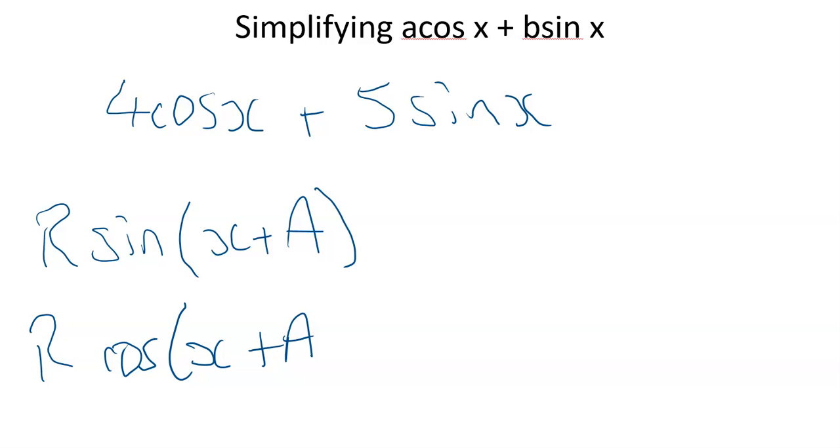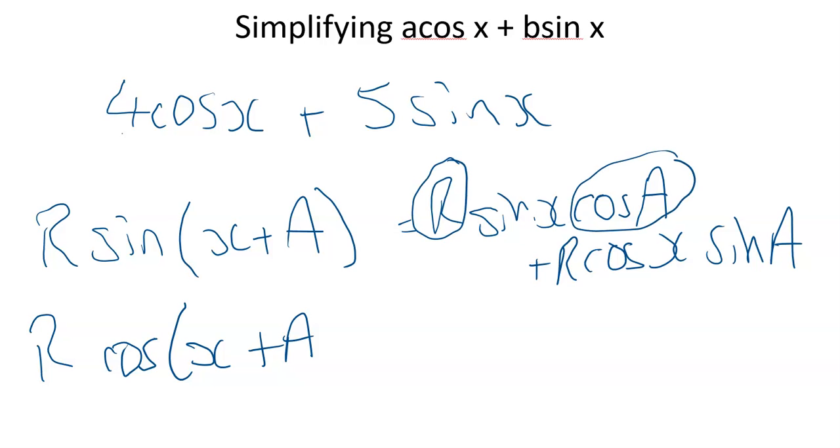It's sort of like doing the reverse of the double angle rule. If this was a double angle rule answer, then what would the values of R and A need to be so that it could work backwards? The R*cos(A) needs to equal 5, and the R*sin(A) needs to equal the 4.